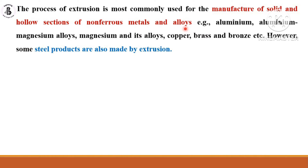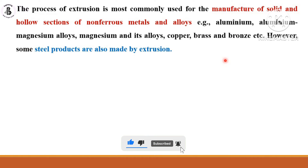If you want to make an extruded product with harder materials, there will be difficulties with flow compared to non-ferrous metals and alloys. Most extrusion products are made with aluminium and its alloys, magnesium and its alloys, copper, brass, bronze, and similar materials. These are the main raw materials used in extrusion products. Both solid and hollow cross-sectional shapes are possible with the extrusion process.